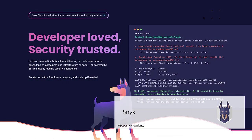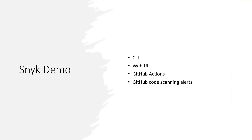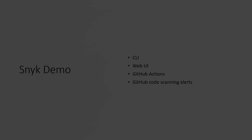But today we'll be looking at Snyk. Similar to Bridge Crew, the platform does a lot more than just scanning of infrastructure as code. But for the purposes of this video, we're going to look at the infrastructure as code parts of what Snyk can offer us. For the demo itself, we'll look at using it through the CLI and the web UI inside GitHub Actions, and then look at how that information surfaces itself in the code scanning alerts.